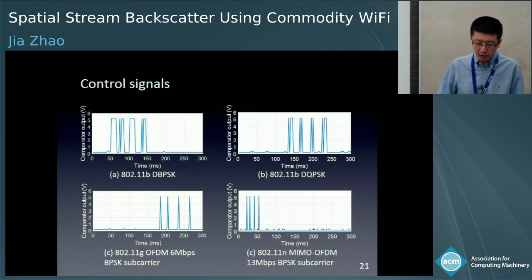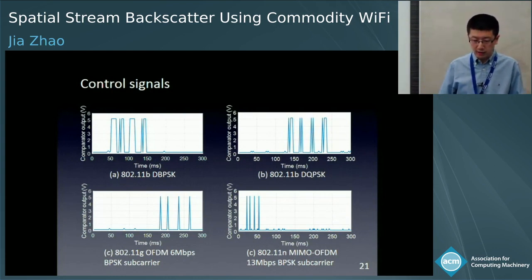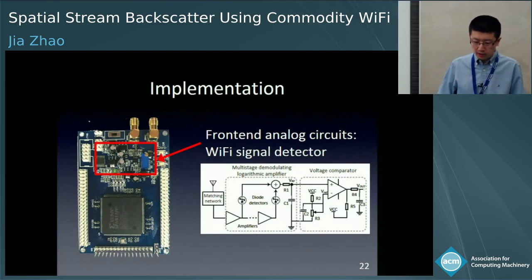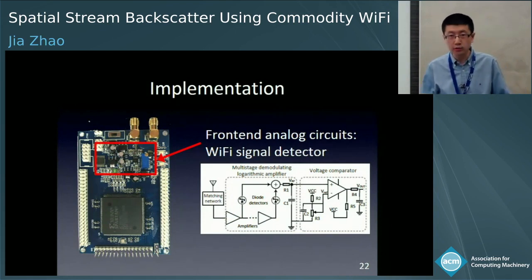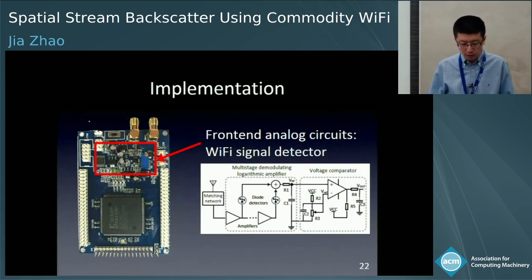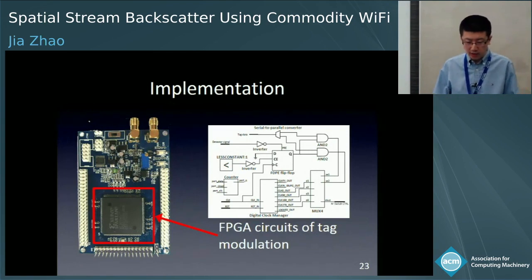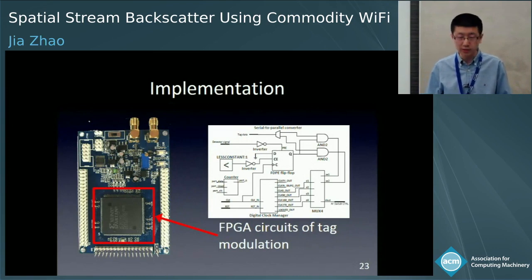Different excitation signals have different packet duration patterns. We can use these signal patterns to notify the tag to automatically select the circuit for different excitation signals. Our tag implementation has two main components. The first is the Wi-Fi signal detector, which includes an RF power detector and a voltage comparator. The second part is the tag modulation circuit, implemented on an FPGA. We use the Xilinx FPGA's IP core — the digital clock manager — to generate phase changes.